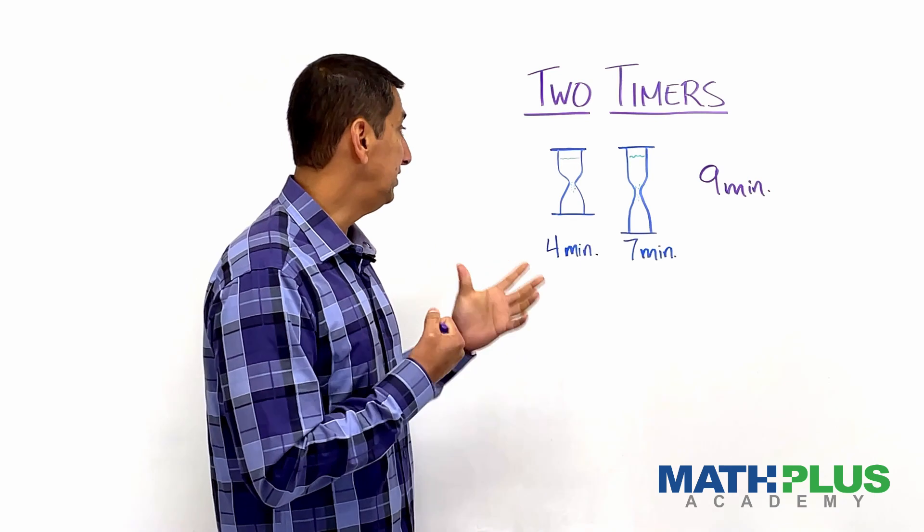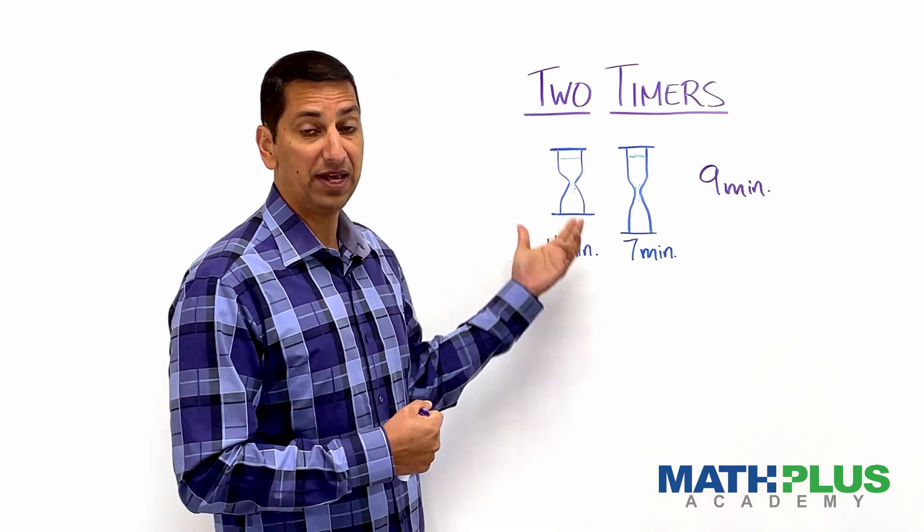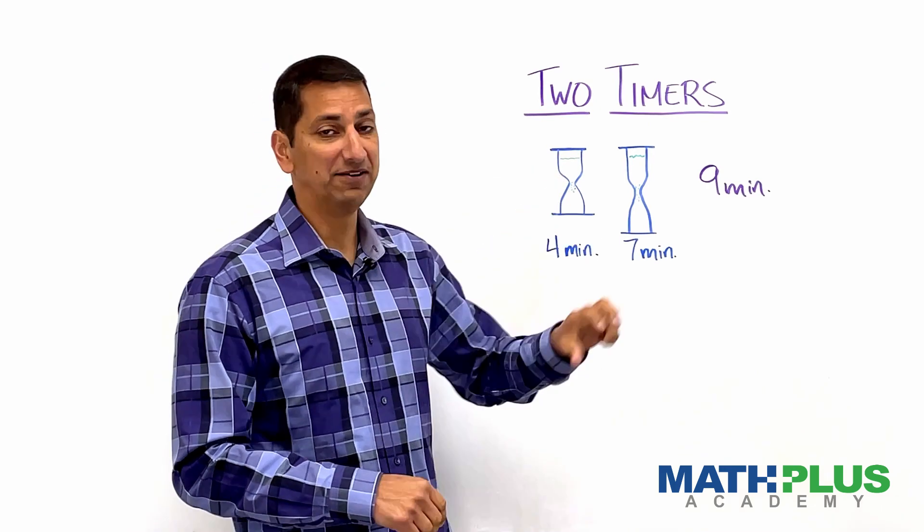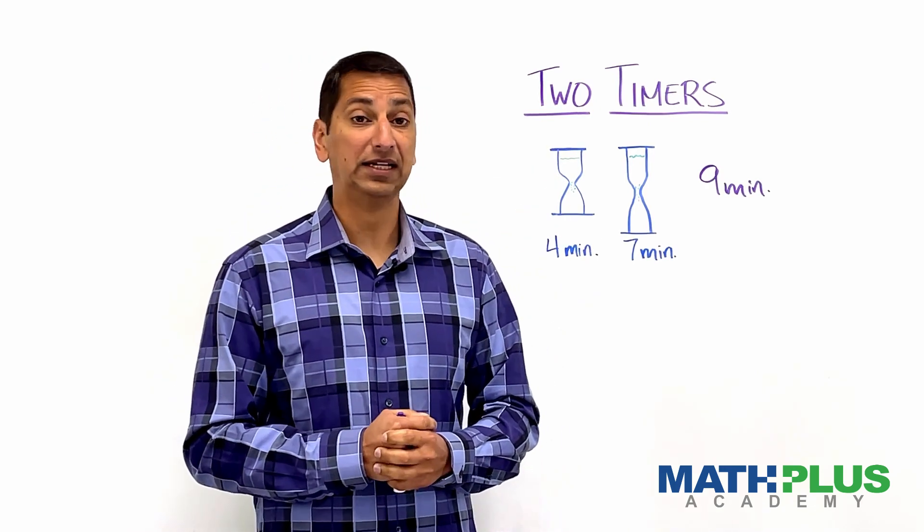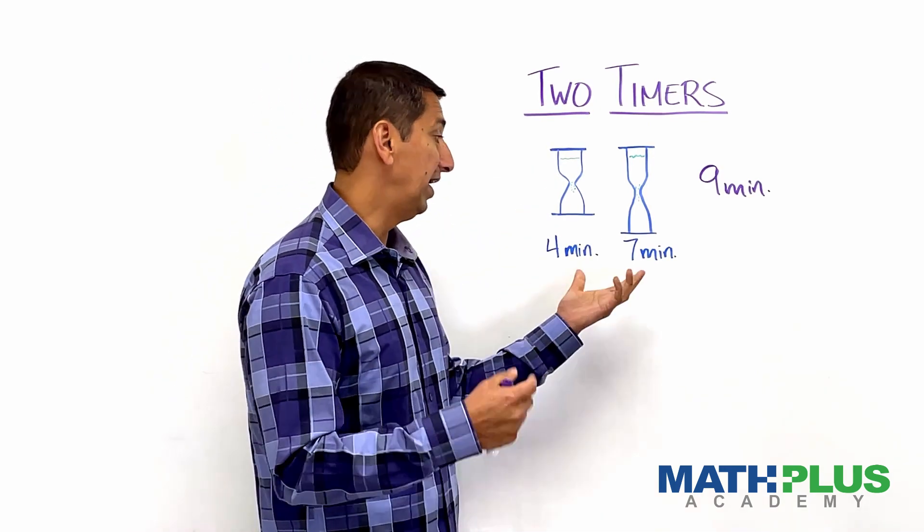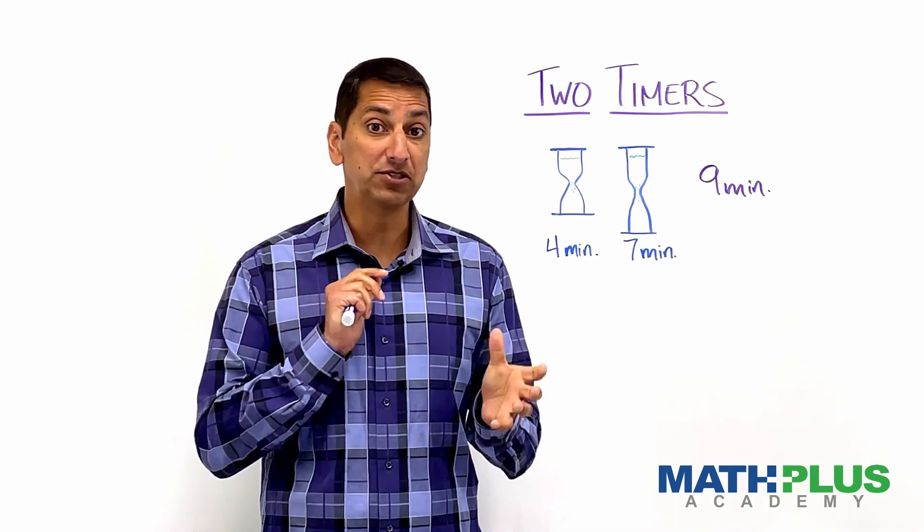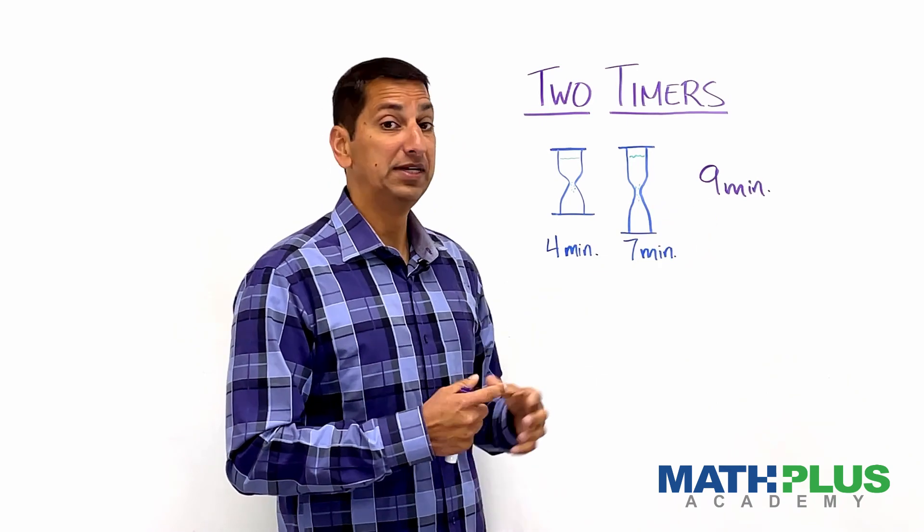Now, with these two timers, you can only measure times in full. You can't estimate when this is timed one minute and flip it over or something like that. You have to use it all the way, and then you can flip it or flip the other one. So using that, can you time out nine minutes?